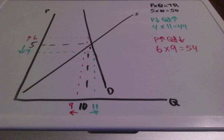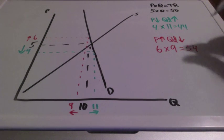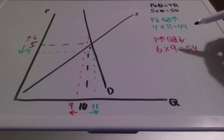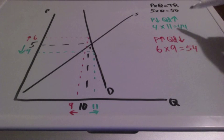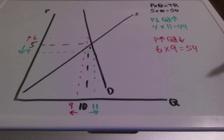So we can conclude that total revenue increases when prices increase if demand is inelastic, and total revenue will decrease when prices go down if demand is inelastic.